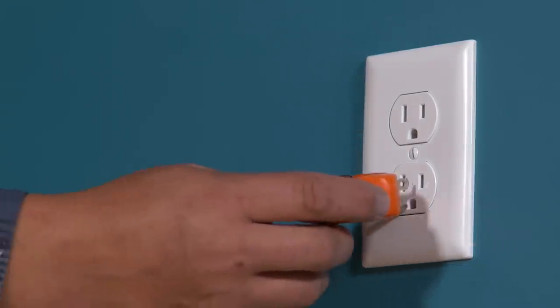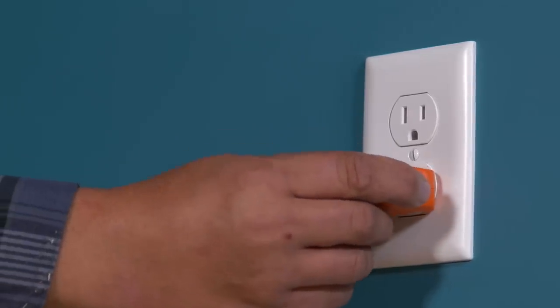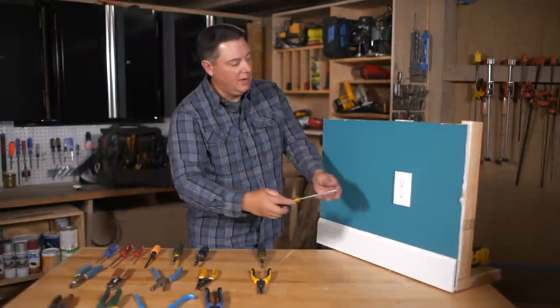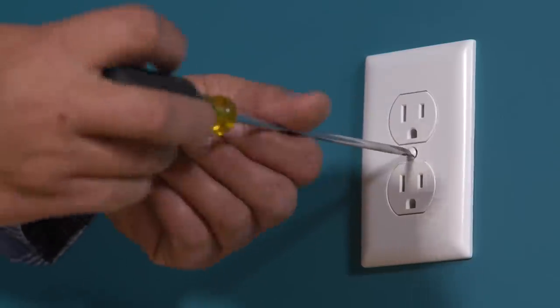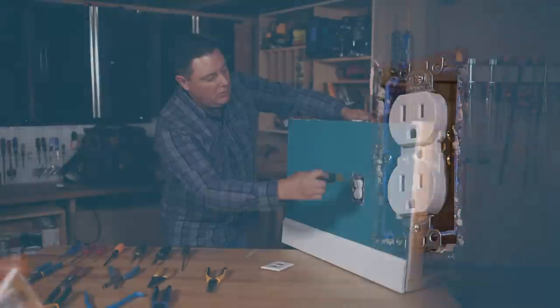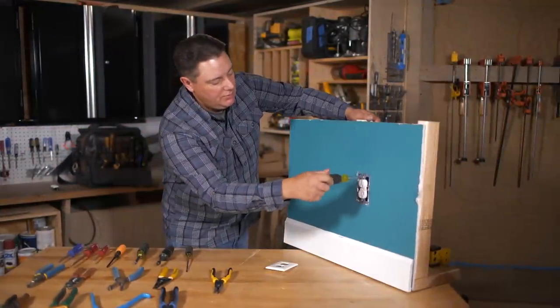So in this case we're going to replace the receptacle. I'm going to plug the tester in just to make sure it's off. No lights, so we're good. Next I'll start by taking the plate off. Now that we have that off, we'll use a Phillips screwdriver to take the device out.